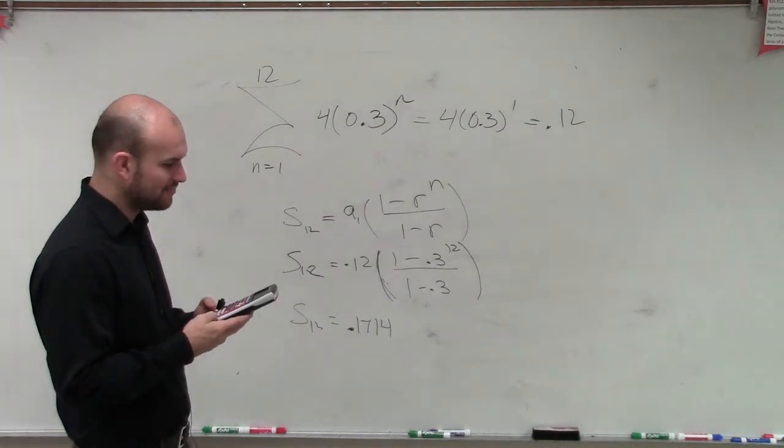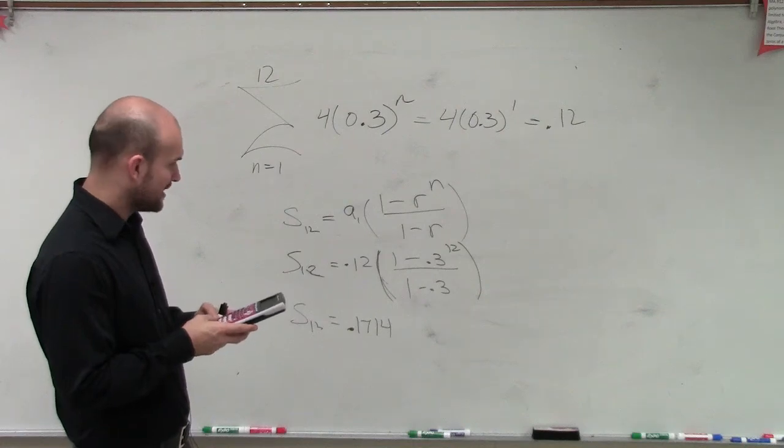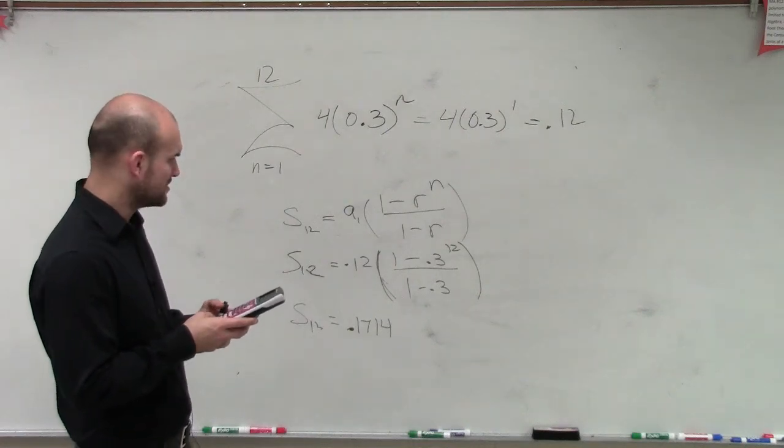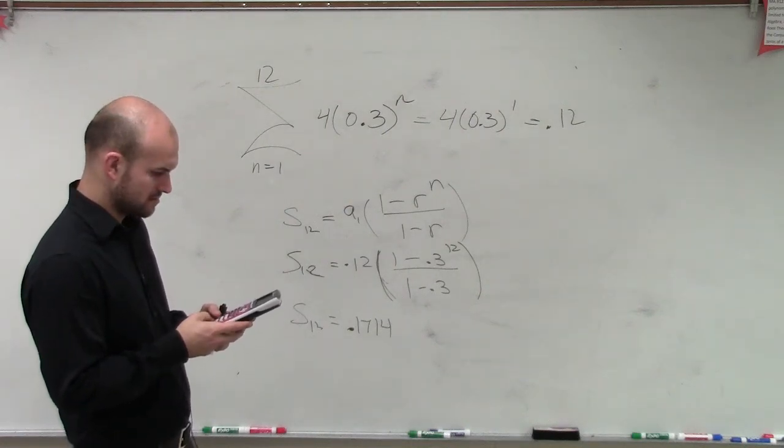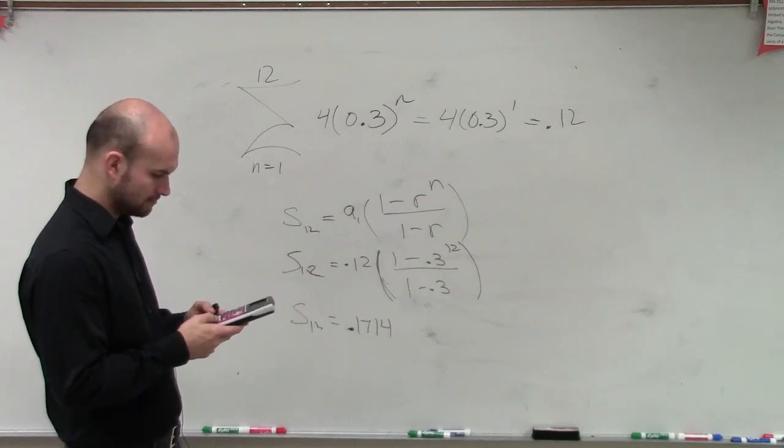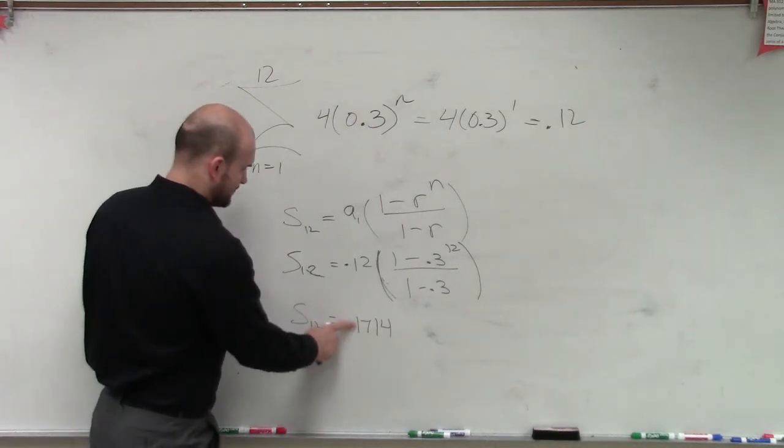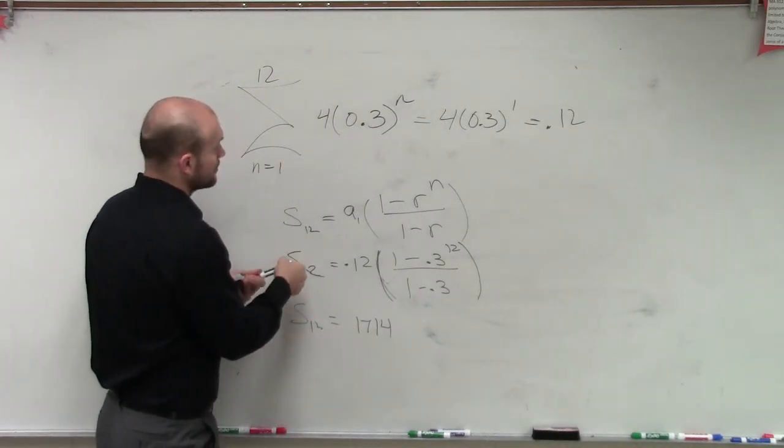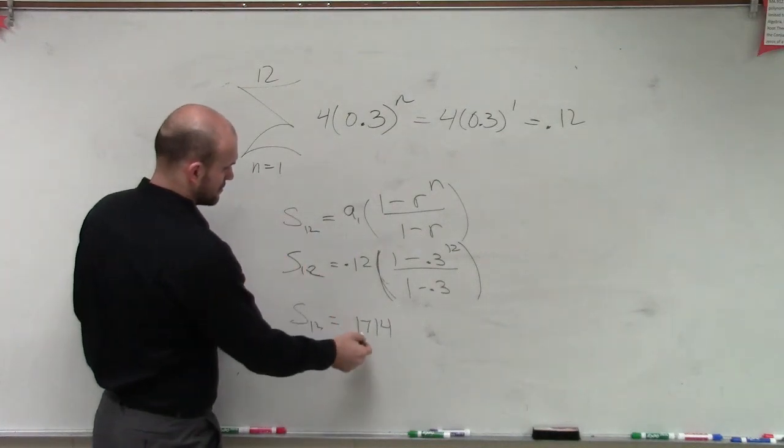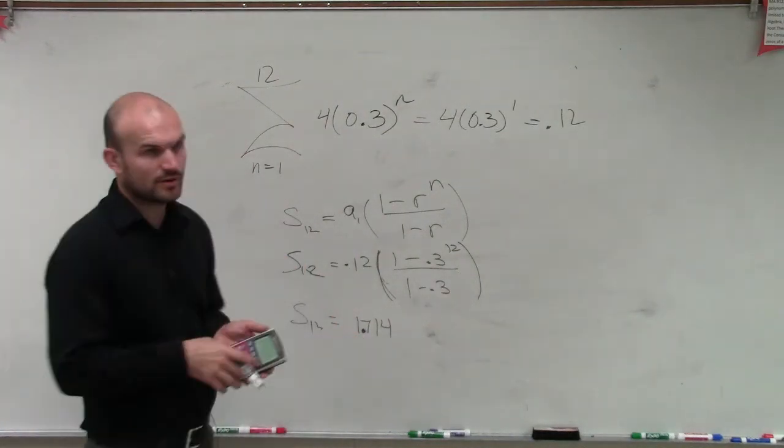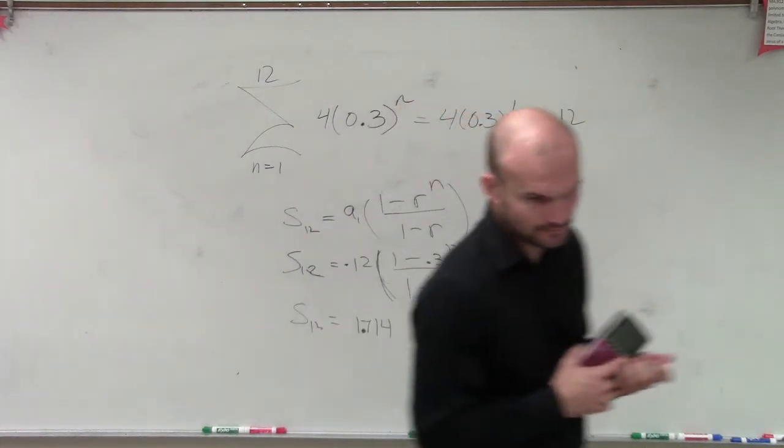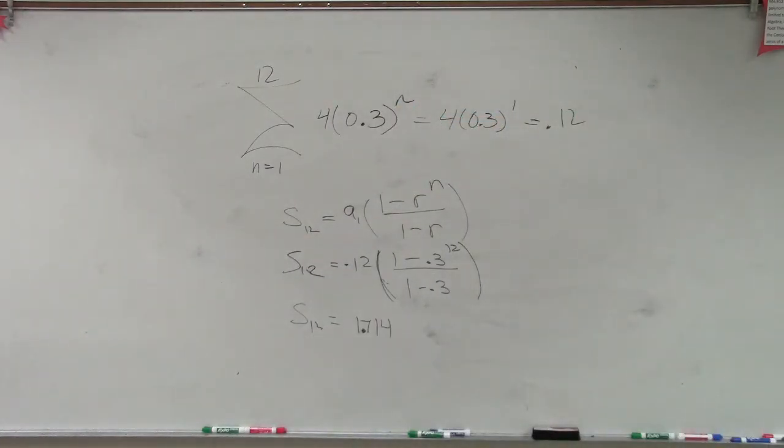Oh, I know what I did. I divided by, I had to divide by 0.7. Yeah, I don't know why I calculated that. 1.714. How?